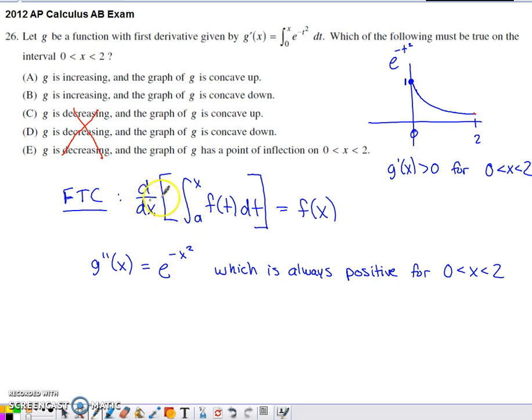So doing the derivative with respect to x, where x is the upper limit of integration, is basically just going to cause the integral and the derivative operators to essentially cancel with each other. And the t, the holding variable, is going to get replaced with that upper limit of integration.